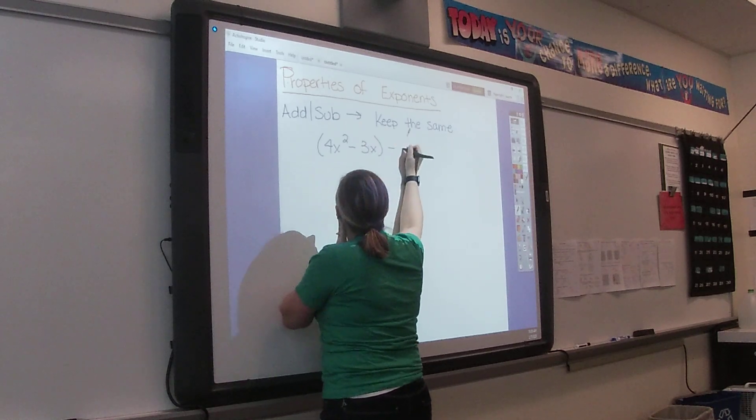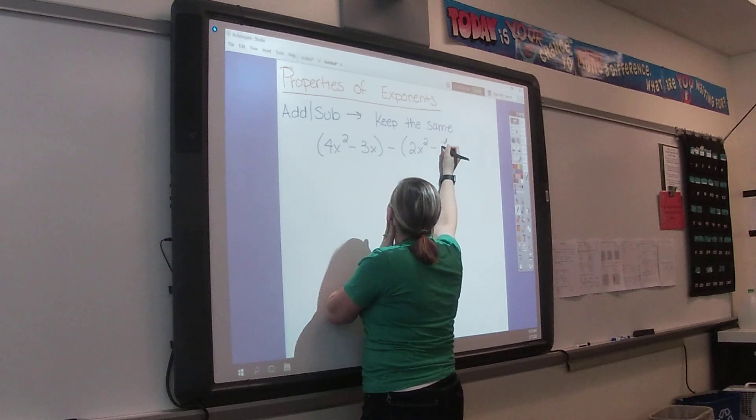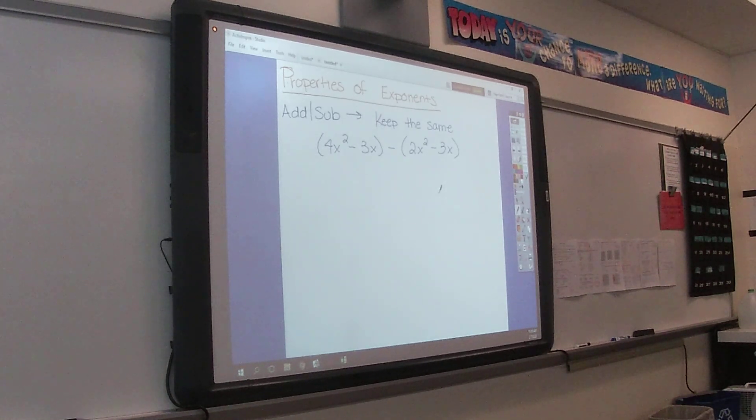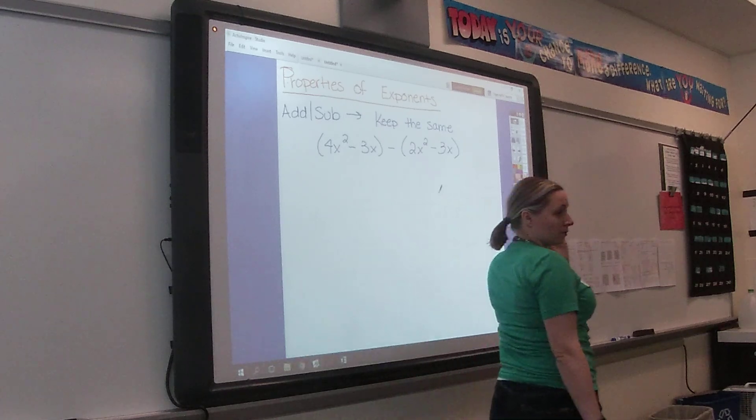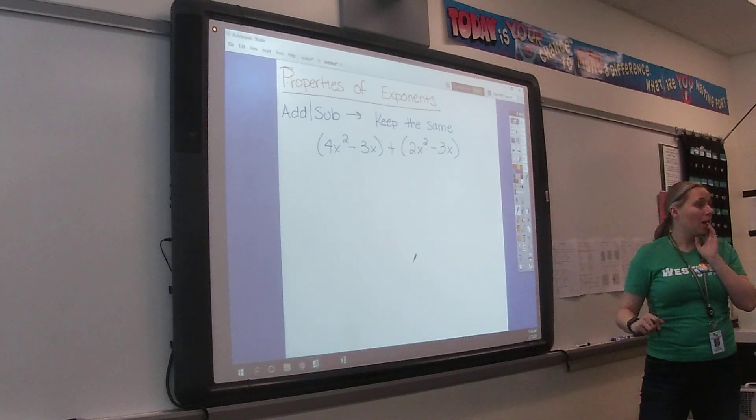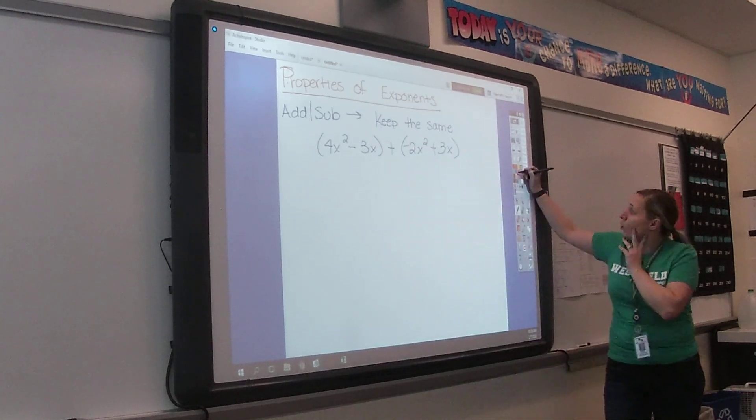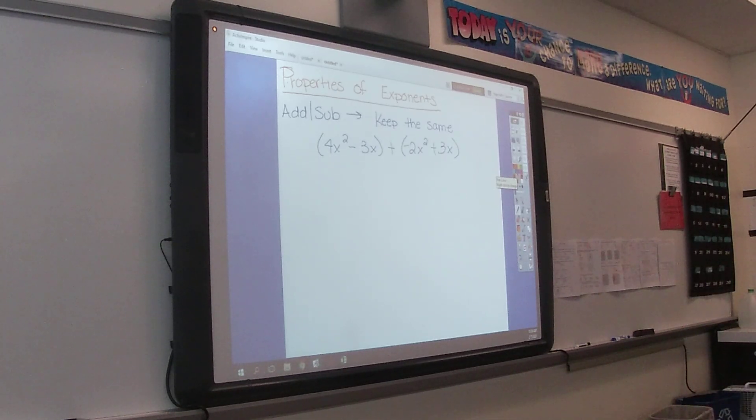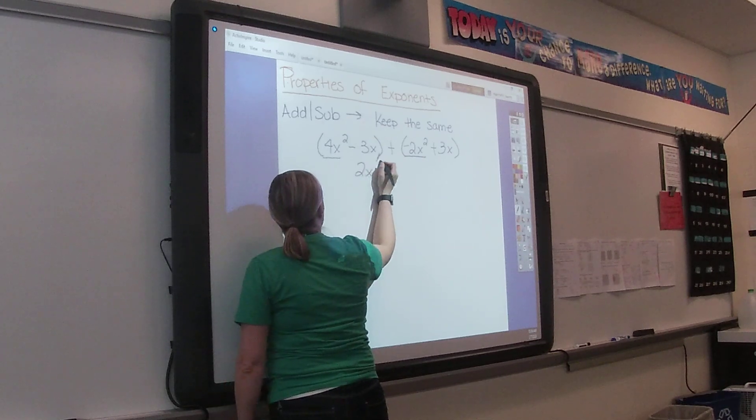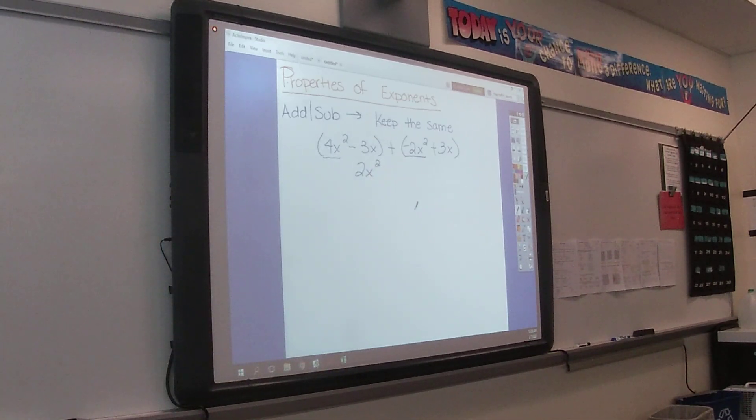So first of all, when we are subtracting with polynomials, what did we say we would always do? Change this. We would change it to addition. So if I change this to addition, what did I then have to do? Turn that to a negative and turn that to a positive.